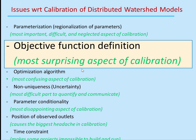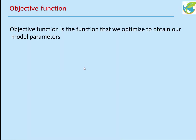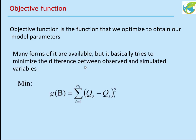That is because once you have calibrated your model using a certain objective function, you realize that if you had used a different objective function you would have gotten a significantly different range of parameters. An objective function is usually defined as the function that we use to optimize to obtain our model parameters.